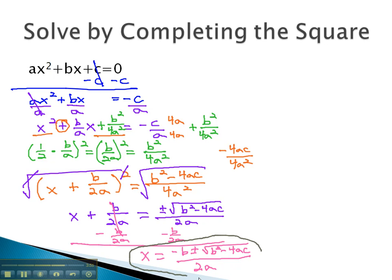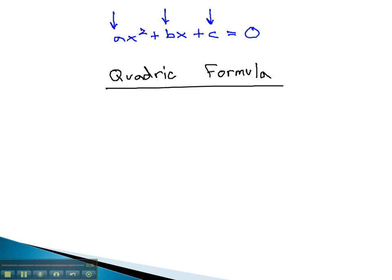This result that we get for x is going to be very important to us as we solve equations. Anytime we have the equation ax squared plus bx plus c equals 0, where we know what the number a, b, and c are, we can solve them using this thing called the quadratic formula.